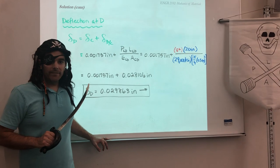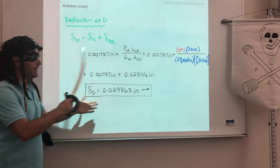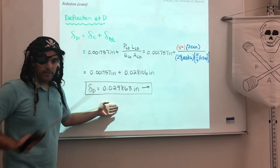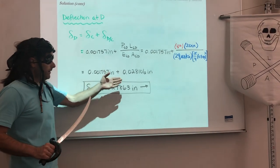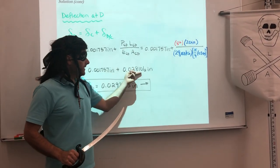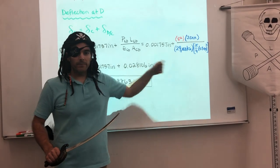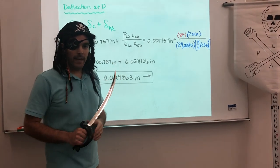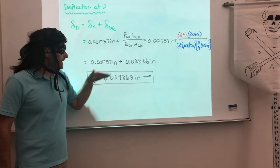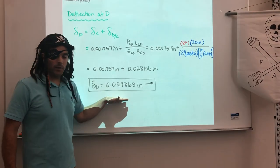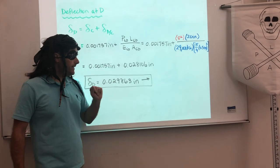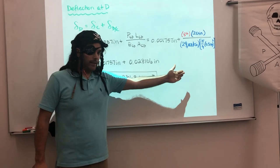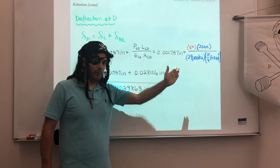So hopefully you did deflection at D and you got something like this. Or you can go ahead and pause the video if you'd like to make sure your notes are correct. But if you did the calculations, you should have got 0.028106 inches for just the extension of segment CD. And adding that to the deflection at C gives us a total deflection of 0.029863 inches. And that is acting to the right, so point D would be shifting to the right.